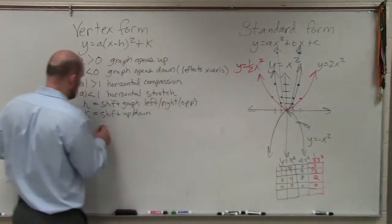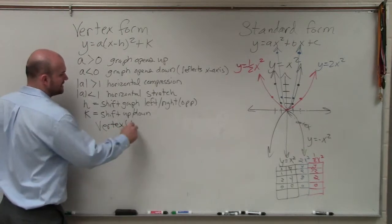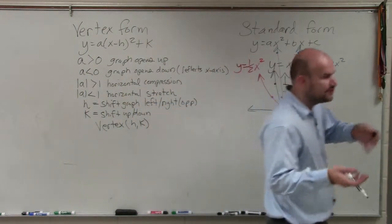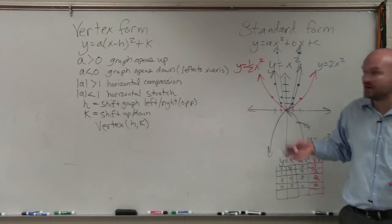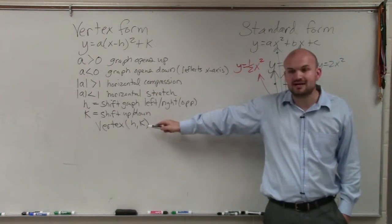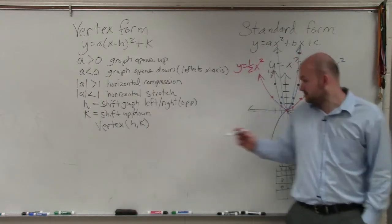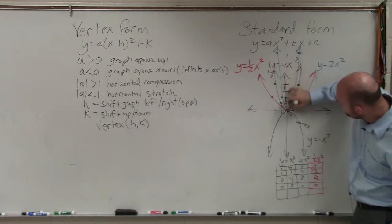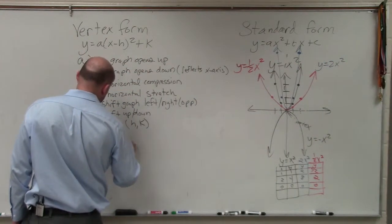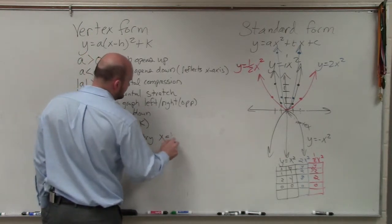So theoretically, what actually happens, not theoretically, actually what happens, is your vertex takes the coordinates of H comma K. So rather than having to do B divided by 2 and then plug that back into the equation like we did for standard form, now all we need to do to find the vertex is find out what H and K is. And remember that the axis of symmetry goes through the vertex. This axis of symmetry goes through the vertex. So your axis of symmetry is X equals H.